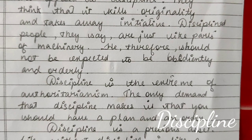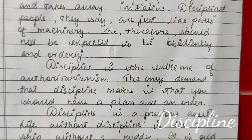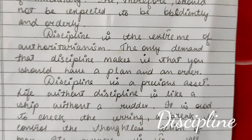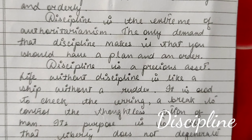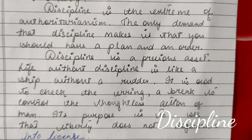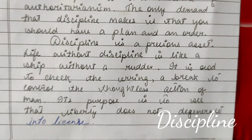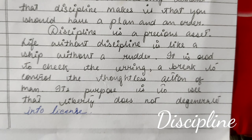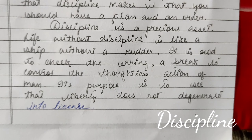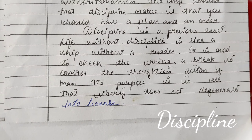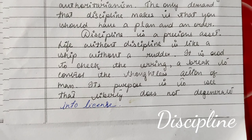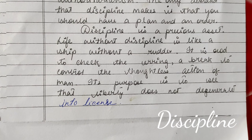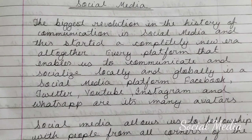Disciplined people, they say, are just like parts of machinery and should not be expected to be obedient and orderly. They claim discipline is the extreme of authoritarianism. But the only demand discipline makes is that you have a plan and an order. Discipline is a precious asset. Life without discipline is like a ship without a rudder — it is a rod to check erring and a brake to control thoughtless action. Its purpose is to ensure that liberty does not degenerate into license.